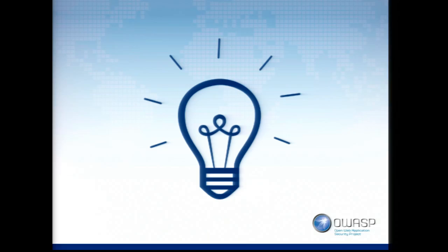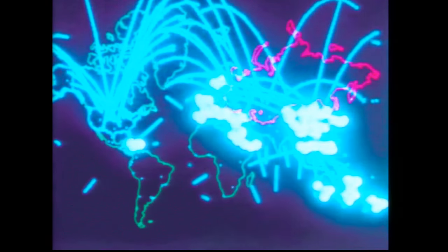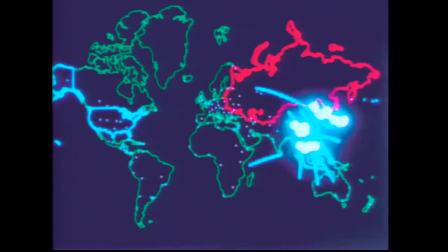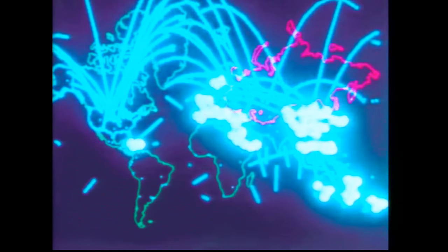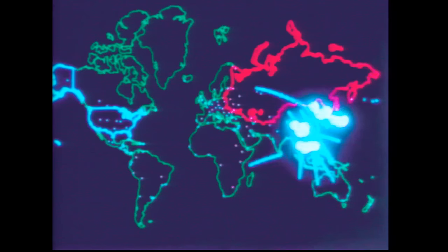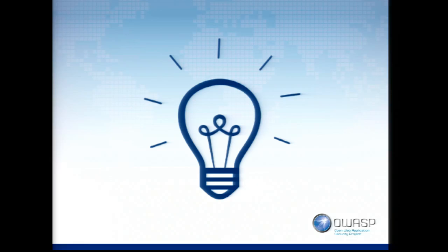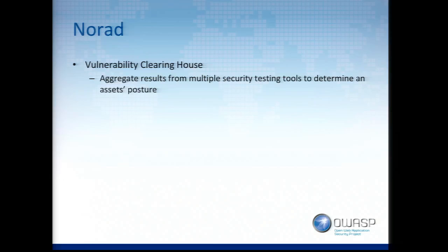About a year and a half ago, we embarked on this idea to create what we call NORAD — previously called Whopper, but we kept on the War Games theme. We call it a vulnerability clearinghouse: a framework that allows us to aggregate the results of multiple security testing tools to determine an asset's posture. We don't want to rely on any one particular tool because different tools give different results.